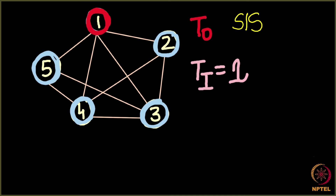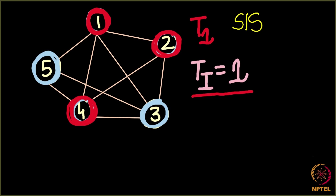On the first day, node 1 looks at all of its neighbors and tries to infect some of them. Let's say node 1 successfully infects node 2 and node 4. By the end of day 1, node 1 recovers — but in the SIS model it does not go to the recovered state. It goes back to the susceptible state, losing its common cold and returning to susceptible.